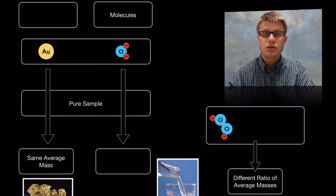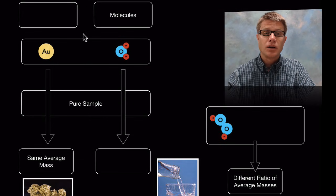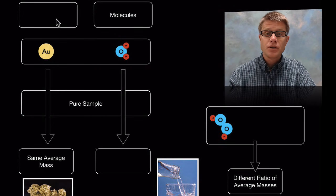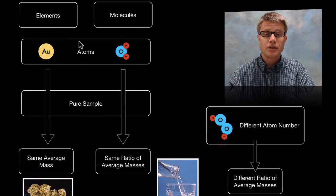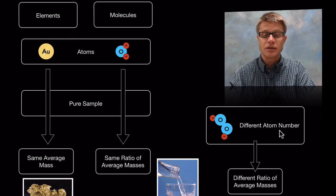And so let's kind of review. Could you pause the video and fill in these little blanks? What goes here, here, here and here? Well up at the top, those are going to be elements and molecules. They're made up of atoms. They're going to have the same ratio of average masses. And then they're going to have a different number of atoms down here on the side.